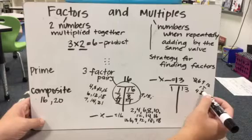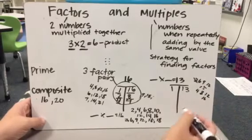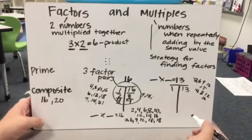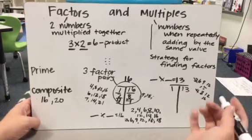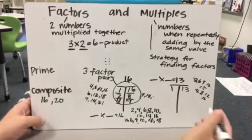If I try 4s, 4, 8, 12, 16. 4 doesn't work. If I skip count by 5s like I've been doing since kindergarten, 5, 10, 15, nope, 5 didn't work.